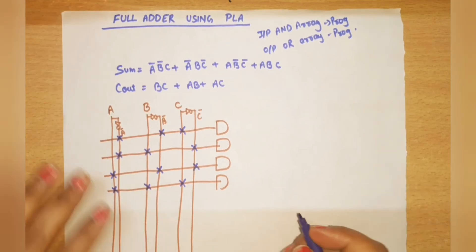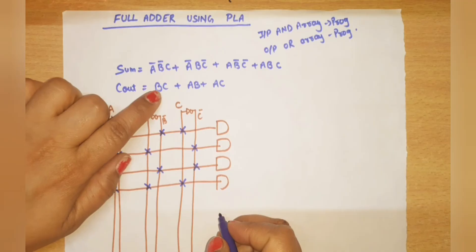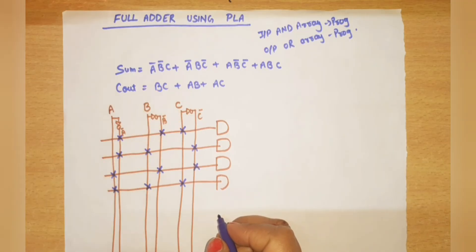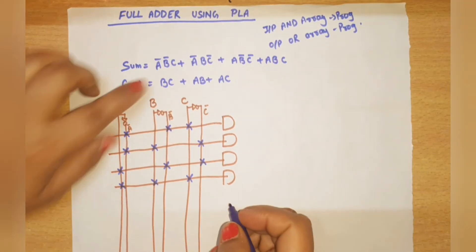Next, for Carry Out — how many product terms are there? Three terms: B·C, A·B, and A·C. So three AND gates are needed for the Carry Out.